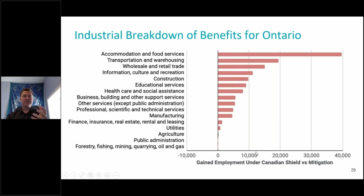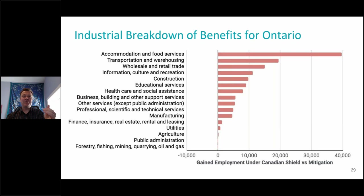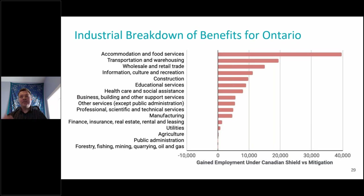Here's an example of the industrial breakdown of the benefits of the Canadian Shield over the continued mitigation alternative, just for Ontario. Not surprisingly, the sectors that benefit the most are things like accommodation and food services, transportation, warehousing, and wholesale/retail trade. Some of these things are probably not surprising, but that's where these outcomes are coming from.